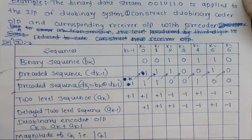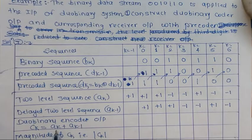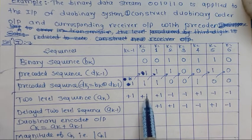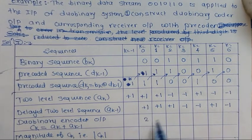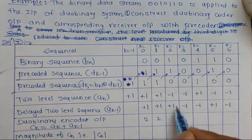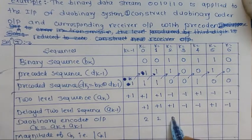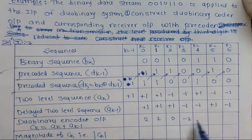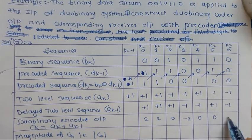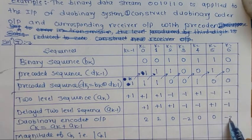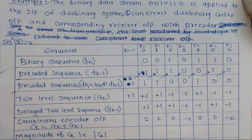The final encoded output ck = ak + ak-1, using an adder. Computing each value: 1+1 = 2; 1+1 = 2; 1+(-1) = 0; (-1)+(-1) = -2; 1+(-1) = 0; (-1)+(+1) = 0; and the last is -2.